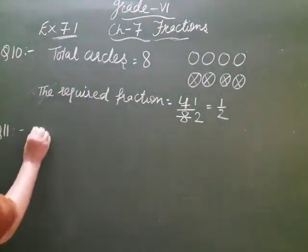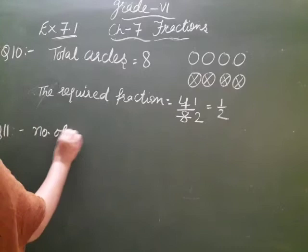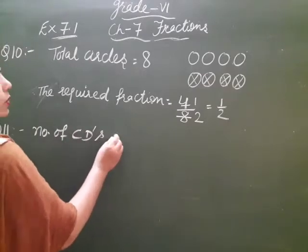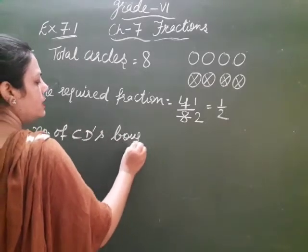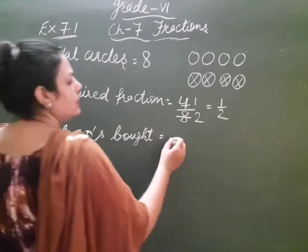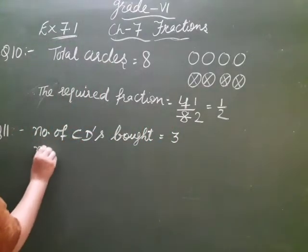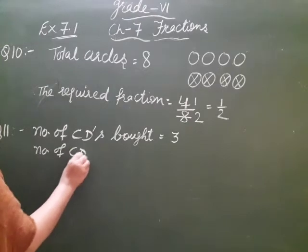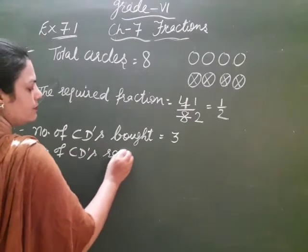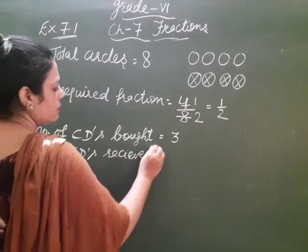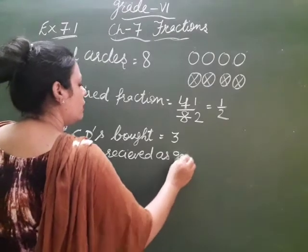So first thing, number of CDs bought - how many CDs did she buy, and how many CDs did she receive as gifts? Number of CDs bought is 3, and CDs received as gifts are 5.